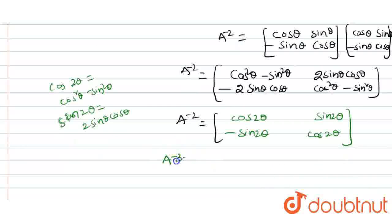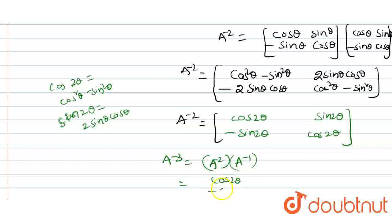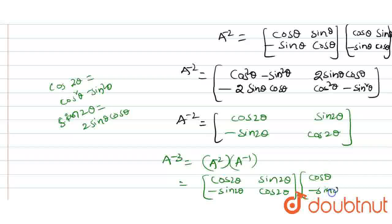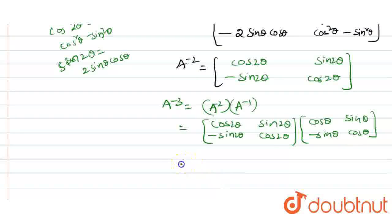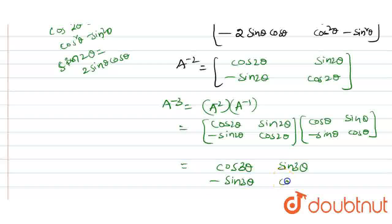Similarly, A power minus 3 equals A power minus 2 times A power minus 1. Multiplying [[cos 2theta, -sin 2theta], [sin 2theta, cos 2theta]] by [[cos theta, -sin theta], [sin theta, cos theta]], after solving we get [[cos 3theta, -sin 3theta], [sin 3theta, cos 3theta]].